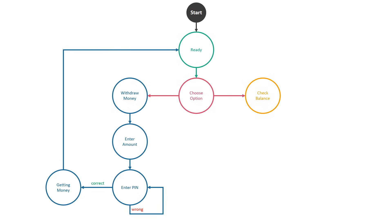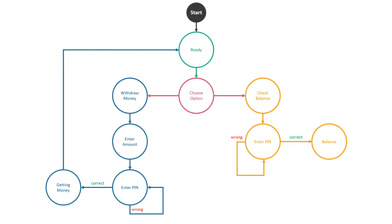Let's see the second option: check balance. Once we choose this option, the state changes to enter PIN. The PIN is checked, and if it's wrong, the state changes to enter PIN again. If the PIN is correct, the state changes to the balance state, where we can see our credit card balance. If we don't want to do anything more, we can get the card and the state changes to ready. As you see, we have different states. In each state some activities are to be done. Depending on the activities and the results, the state changes to another state.